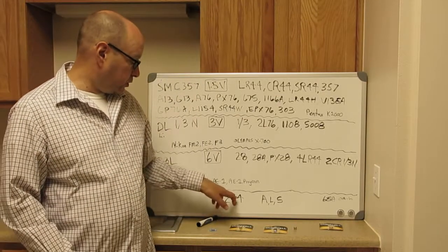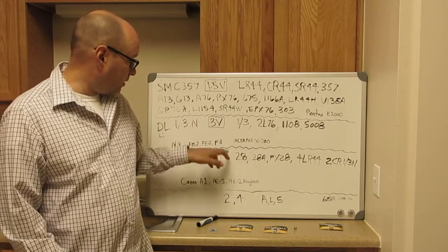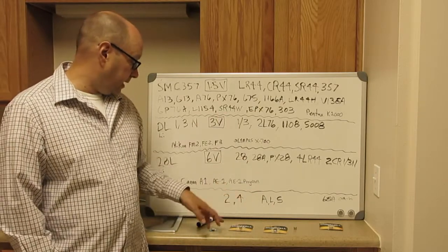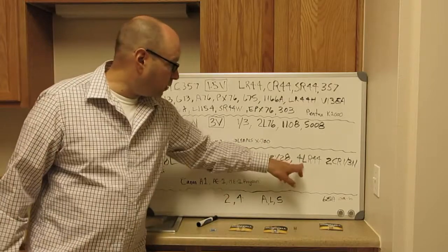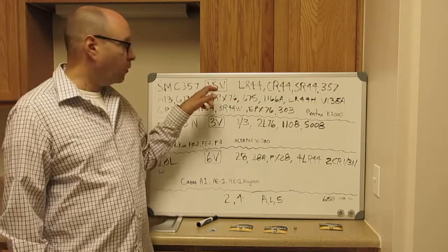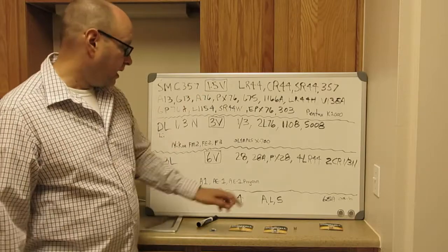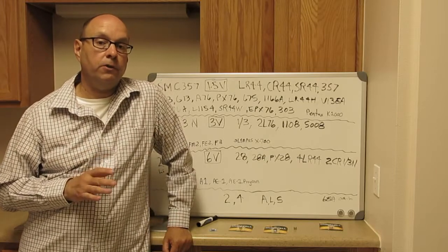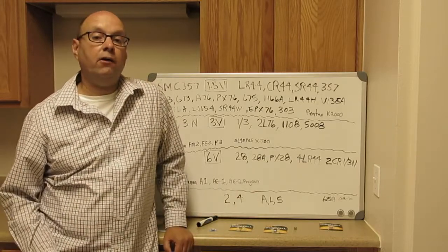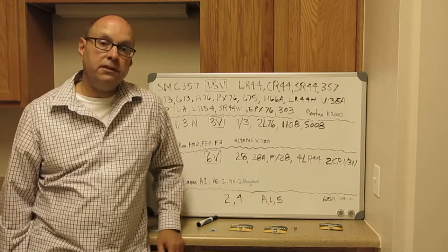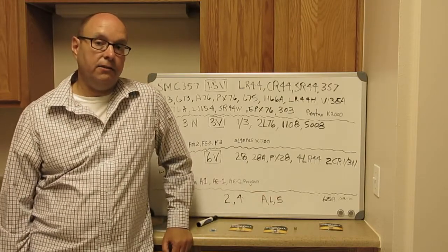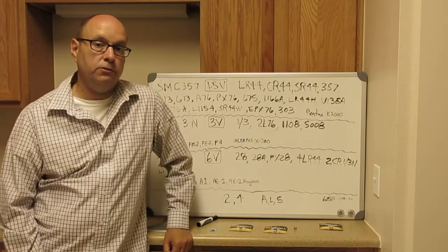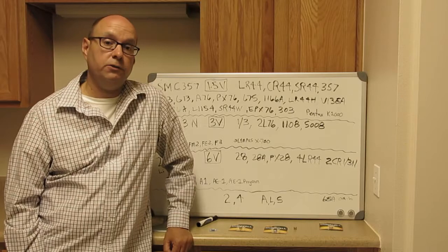So the number two in front of the battery means two times whatever. The number four would mean four times, like 4LR44, four 1.5 volt batteries. The A, L and S - this is a general guideline. The A generally stands for alkaline, the L stands for lithium, and the S stands for silver oxide.